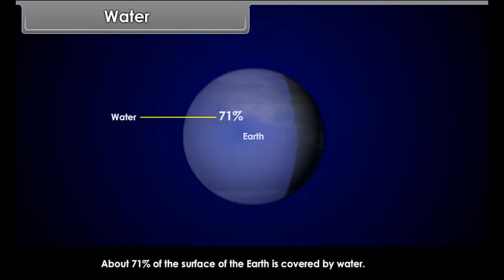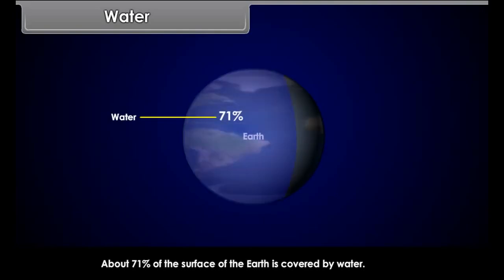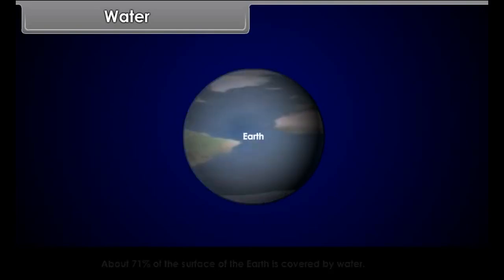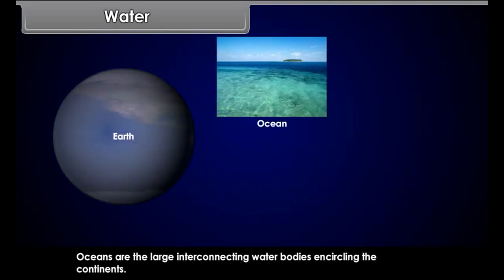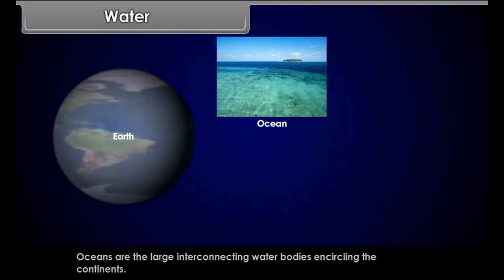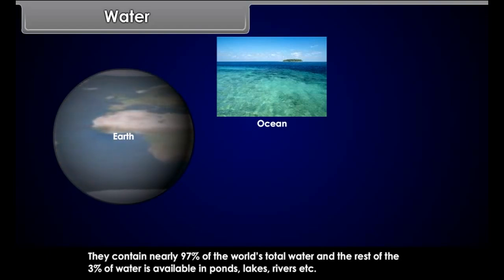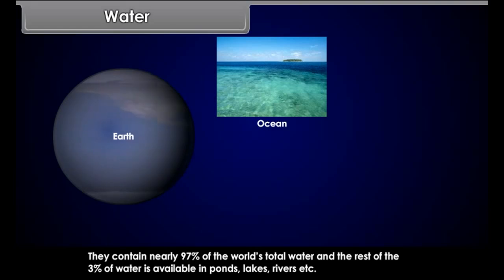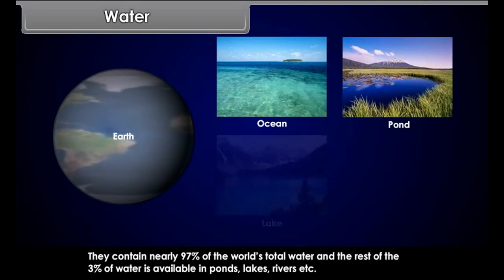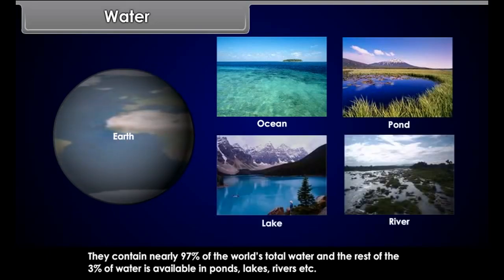About 71% of the surface of the Earth is covered by water. Oceans are the large interconnecting water bodies encircling the continents. They contain nearly 97% of the world's total water, and the rest of the 3% of water is available in ponds, lakes, rivers, etc.